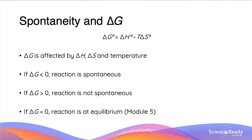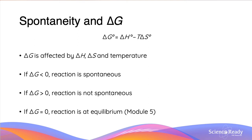Now let's look at the next scenario, where we have an unfavourable delta H, which is positive, and an unfavourable delta S, which is negative. T delta S is negative, and so a positive minus a negative gives a positive plus a positive, which is always going to be greater than zero, meaning that the reaction is going to be non-spontaneous.